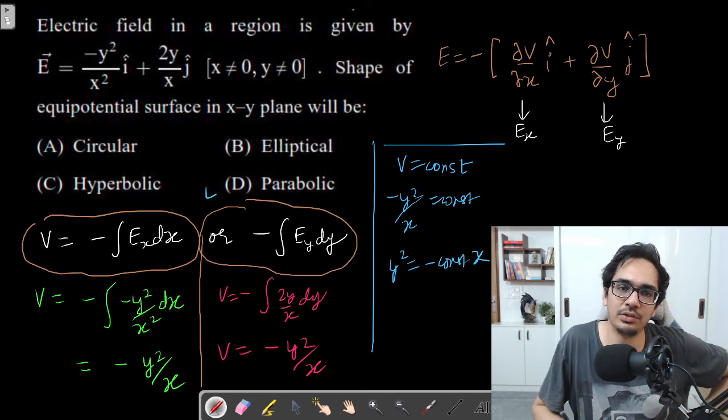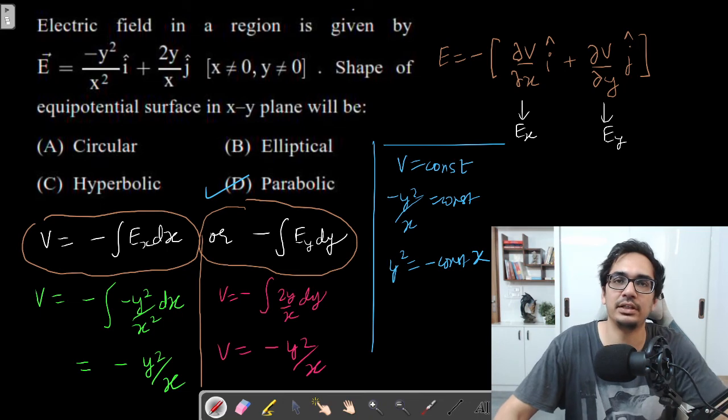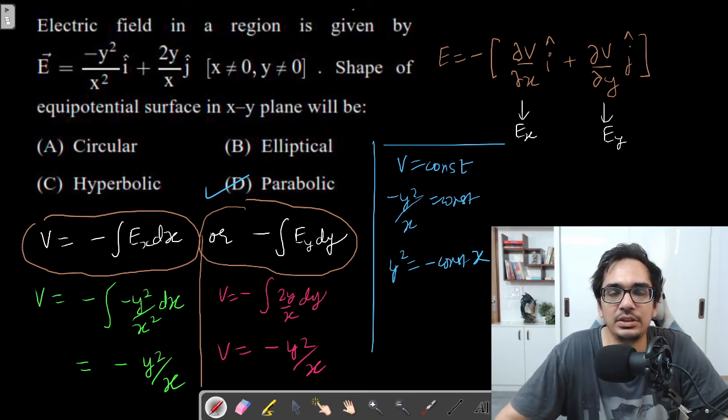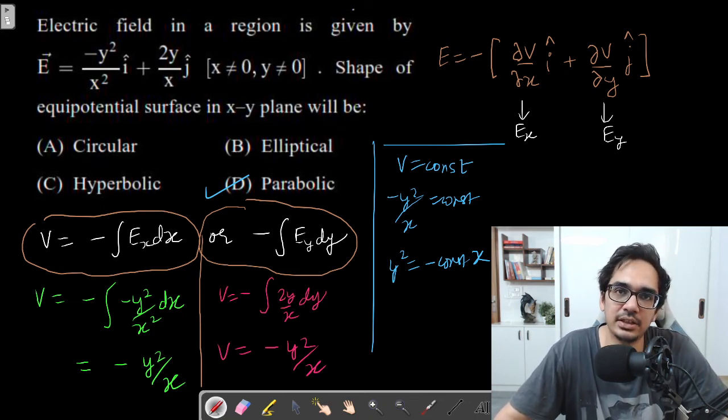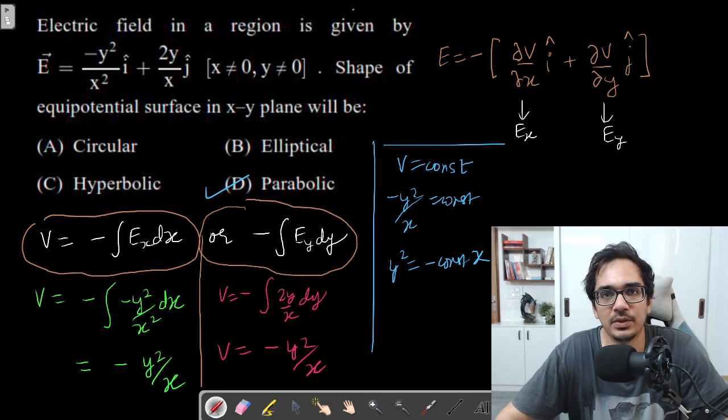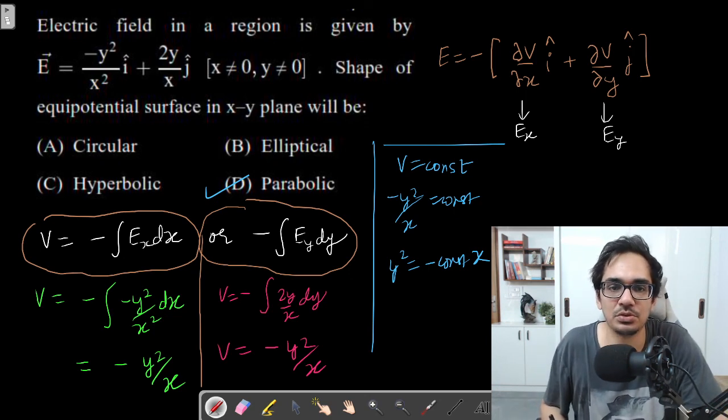Always remember if electric field vector is given in terms of x, y, z, you can find the potential by either integrating Ex dx or doing Ey dy. This is an interesting approach to solve questions like this. All the best. Thank you.